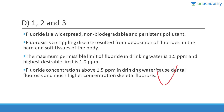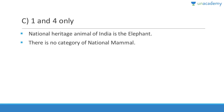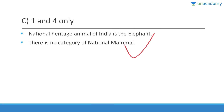Question 322: National animal is Royal Bengal Tiger — correct. National heritage animal of India is the elephant — correct (not langur). There is no category of national mammal of India. National bird is peacock — correct. Answer is C (1 and 4 only), since statement 2 about langur as national heritage animal is wrong.